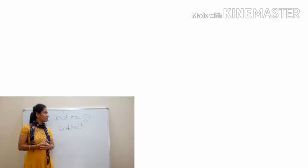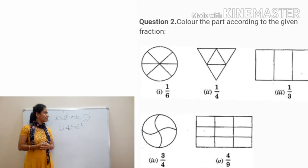Question 2: color the part according to the given fraction. This question is just the vice versa of question 1. In the previous question, shaded portions were given and we wrote the fraction. Here the fraction is given and we just shade the portion. First part: 1 upon 6 means out of 6 parts, shade only one part. Second part: 1 upon 4 — out of 4 parts, shade any one part. In the same manner, do the rest. This question you will also do in your book as homework.